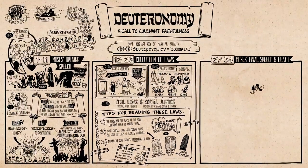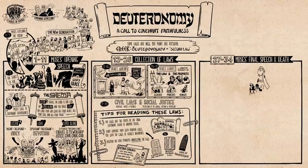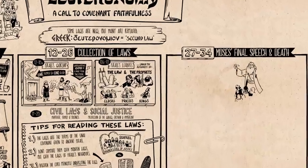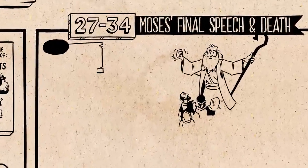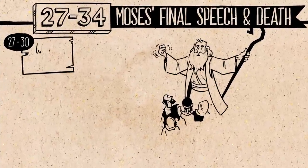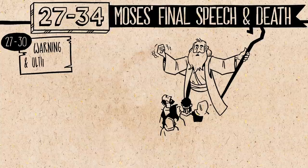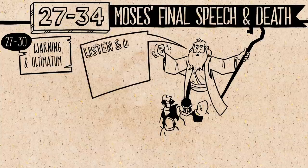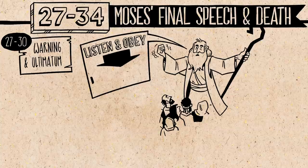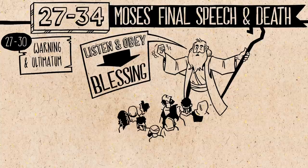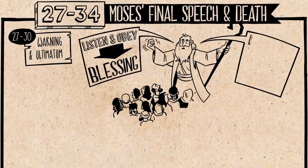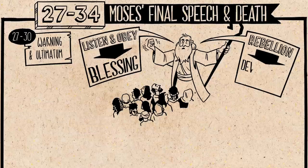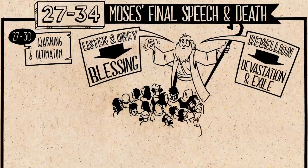So back to Moses. After he goes through all of the laws, he issues a final challenge that Israel should listen to and love their God. He first issues a warning and the ultimatum: if Israel listens to and obeys their God, everything's going to go great — lots of divine blessing. But if they don't listen and rebel, famine, plague, devastation, and ultimately exile from the land.